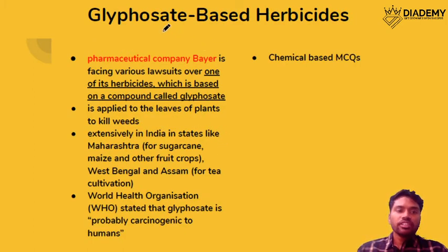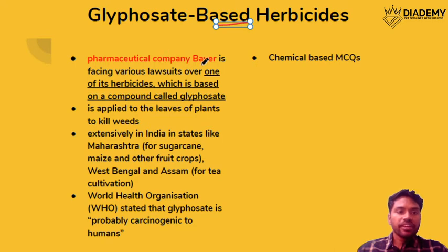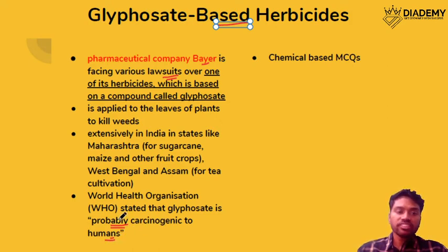The next topic is glyphosate-based herbicides. UPSC has been asking questions on chemicals that impact the environment for the past 2-3 years. The pharmaceutical company Bayer is facing a lawsuit regarding this herbicide because, according to the World Health Organization, it is a probable carcinogenic agent that might cause cancer in humans. Glyphosate is used for killing weeds.